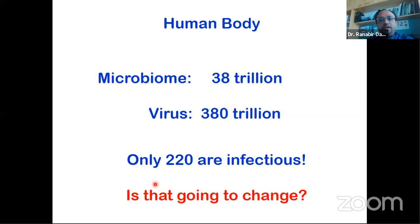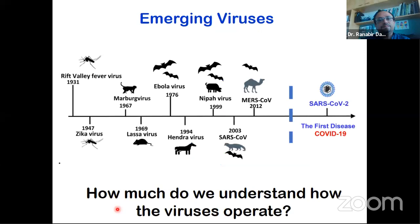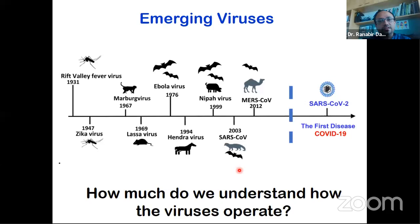The number of viruses found to actually infect the human body is around 220. The recent pandemic has raised the question of whether these numbers are going to change. The viruses transferred from animals to humans have increased in frequency since the 1990s — for example, Zika virus was initially found in 1947 but came back in 2010, and Ebola has also come back. The higher frequency of these viruses causing pandemics is a cause of concern.